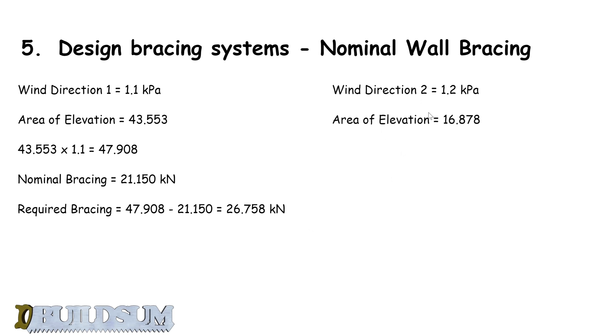If we look at wind direction 2, we originally needed 20.254 kilonewtons of resistance. Our nominal bracing is going to give us 14.409, which is more than half of that. But remember, we can only use nominal bracing for 50%. So we take 20.254, divide that by 2, and we have 10.127 kilonewtons of bracing still required in wind direction 2.